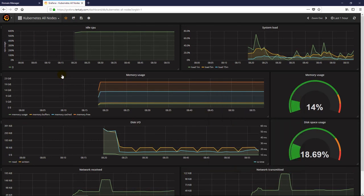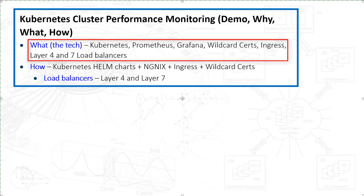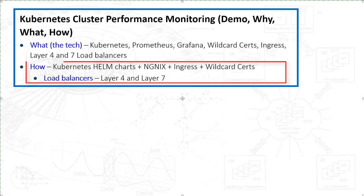The technology stack here is pretty simple. We're going to be talking about Kubernetes, Prometheus, and Grafana. But there's also the notion of wildcard certificates, ingress controllers, along with NGINX, layer 4, and layer 7 load balancers. The how here is pretty simple — we're going to leverage Helm, along with some custom YAML manifest files for NGINX and the ingress controller.